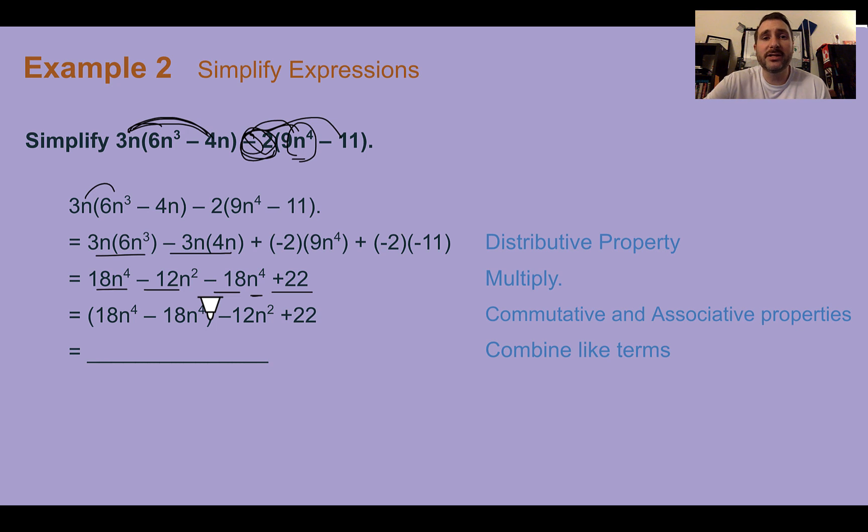Now we can combine like terms. So let's regroup things that are alike. We have positive 18n⁴ here, minus 18n⁴ there. So we group those together. There are no other n squareds, so that's by itself. And there's no other constants, so 22 is by itself. Finally, combining things together. These would just disappear. 18 minus 18 is 0. So we're left with -12n² + 22.